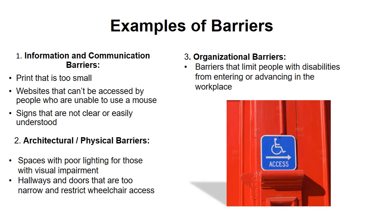Examples of barriers: Information and communication barriers include print that is too small, websites that can't be accessed by people who are unable to use a mouse, and signs that are not clearly or easily understood. Architectural or physical barriers include spaces with poor lighting for those with visual impairments, and hallways and doors that are too narrow or restricted for wheelchair access. Organizational barriers limit people with disabilities from entering or advancing in the workplace.